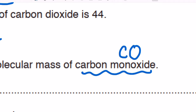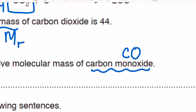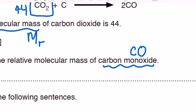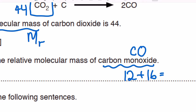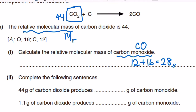To find the relative molecular mass of CO, find the mass of carbon from the periodic table: it is 12. The mass of oxygen is 16. So 12 plus 16 equals 28. The Mr of carbon monoxide is 28.